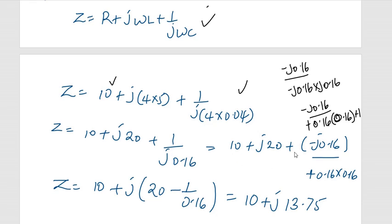That's why we have 10 plus j20, negative j0.16 divided by 0.16 times 0.16, which is a positive.